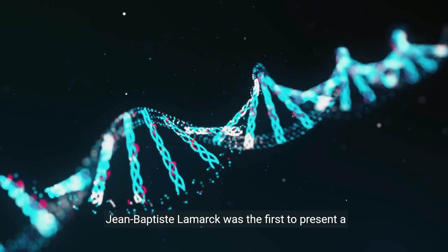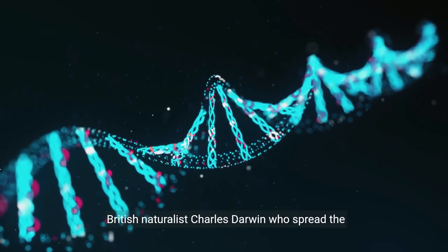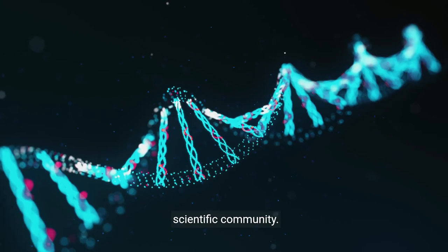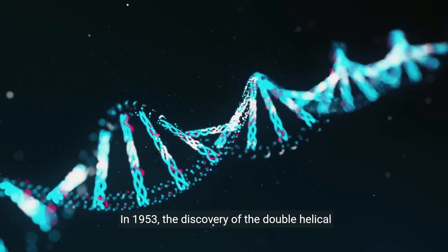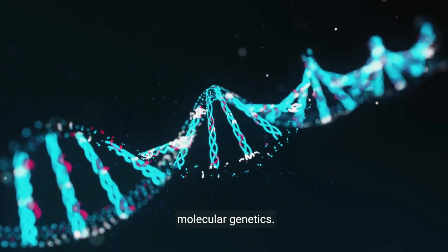Jean-Baptiste Lamarck was the first to present a coherent theory of evolution, although it was the British naturalist Charles Darwin who spread the theory of natural selection throughout the scientific community. In 1953, the discovery of the double helical structure of DNA marked the transition to the era of molecular genetics.